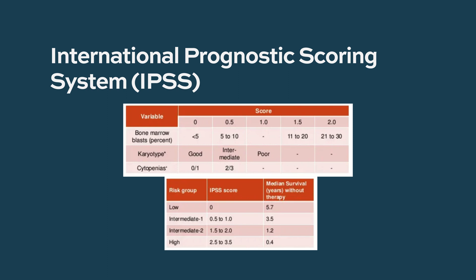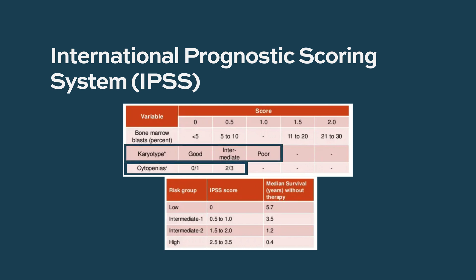Some of the factors are: what are your blood counts? If they're really low, then you go into a higher category. The other factor is what genetic changes we see — do we see specific mutations or specific chromosome abnormalities that might put you in one risk group or another?